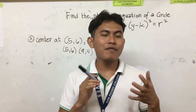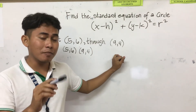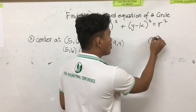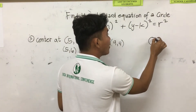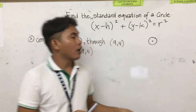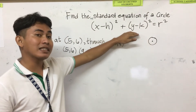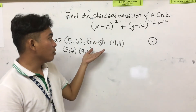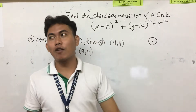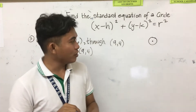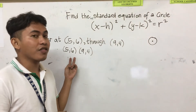For our third example, we have this situation: center at (5, 6) through point (9, 4). This means that if you create a graph of a circle, (5, 6) is the center and (9, 4) is one of the endpoints of the circle. As you have observed, the only given we can substitute into the standard equation is the center — there is no radius given. So of course, you need to find the radius first in order to find the standard equation of the circle.